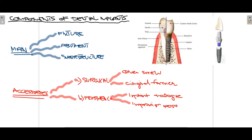Classifying the components of dental implants, there are two classes. The first is the main components: fixture, abutment, and superstructure — also known as the artificial crown. The second class is accessories, divided into surgical accessories — cover screw and gingival former — and prosthetic accessories — implant analog and impression post. All of these structures can be seen in this diagram.